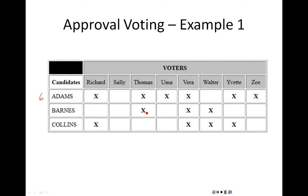Barnes was only approved by Thomas, Vera, and Walter, so he only had three approval votes. Collins was approved by Richard, Vera, Walter, and Yvette, so that gives four approval votes. And then your winner, in this case, is Adams, who has six approvals from the voters — the most out of anybody — so that's the person who wins.